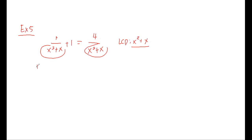So we have 1 over x squared plus x. We multiply this by the LCD, plus the next term is 1 multiplied by the LCD. And the last term is 4 over x squared plus x. We multiply this by the LCD.